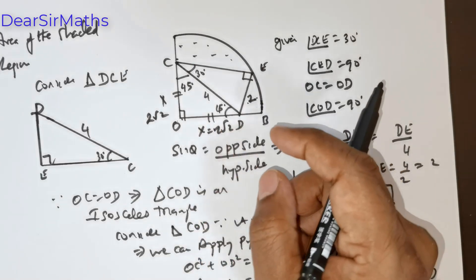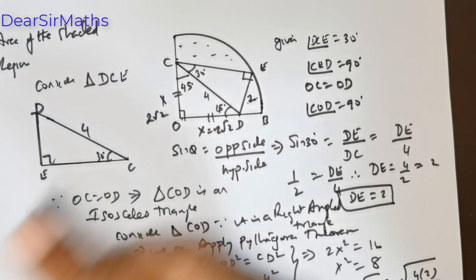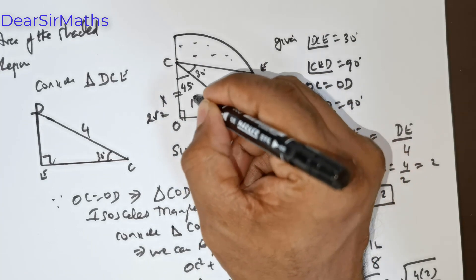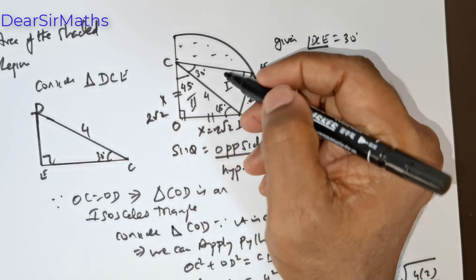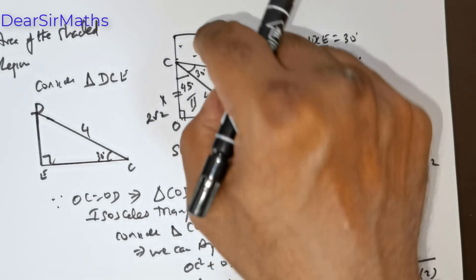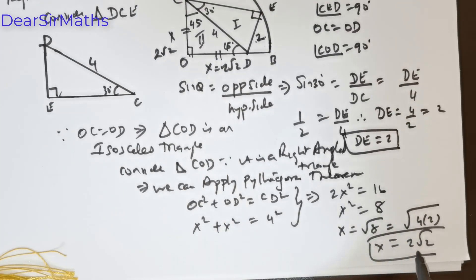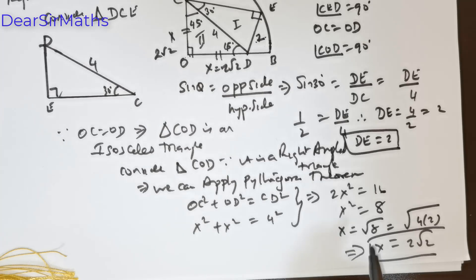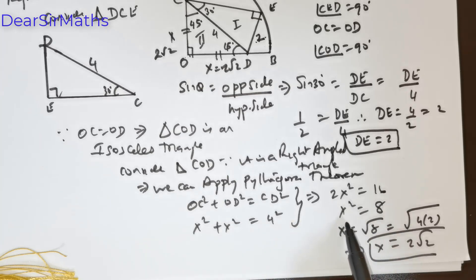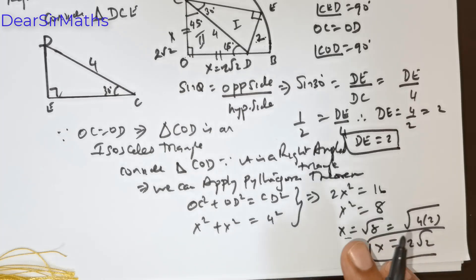Why am I finding all this? For the very fact that I will have to use the area of triangle DCE and the area of triangle COD, and I will have to subtract these areas from the area of the quarter circle sector. I hope you saw this important step. So x squared plus x squared gives 2x squared equals 16, x squared equals 8, and x equals 2√2.